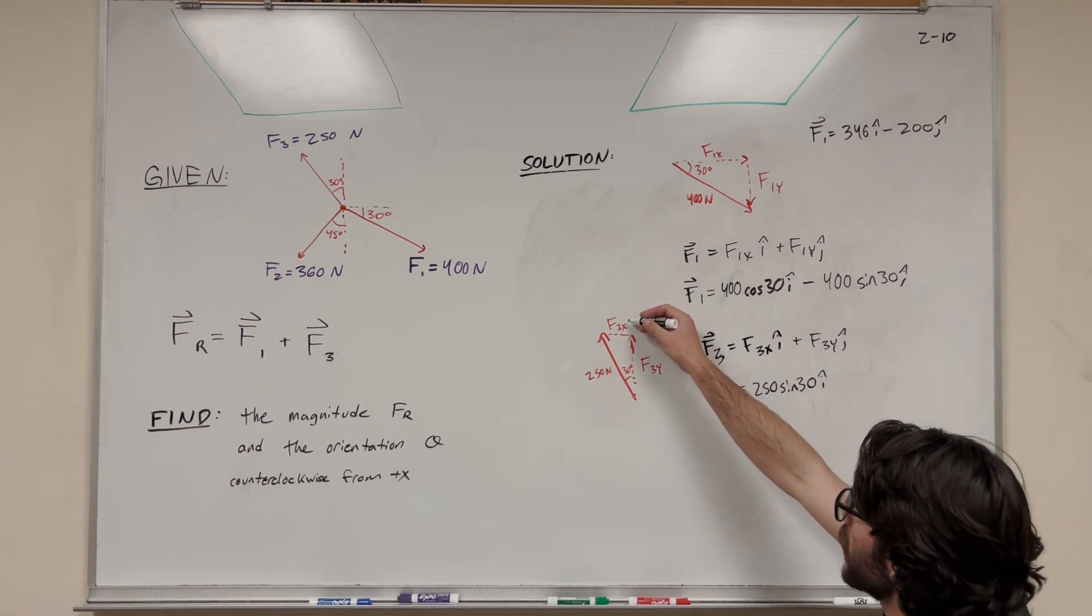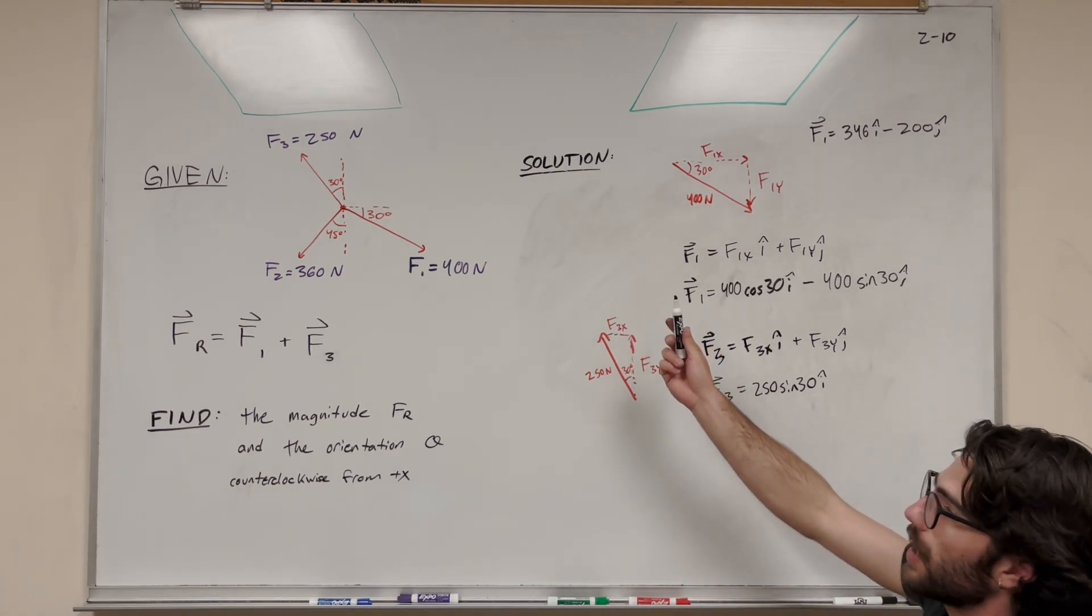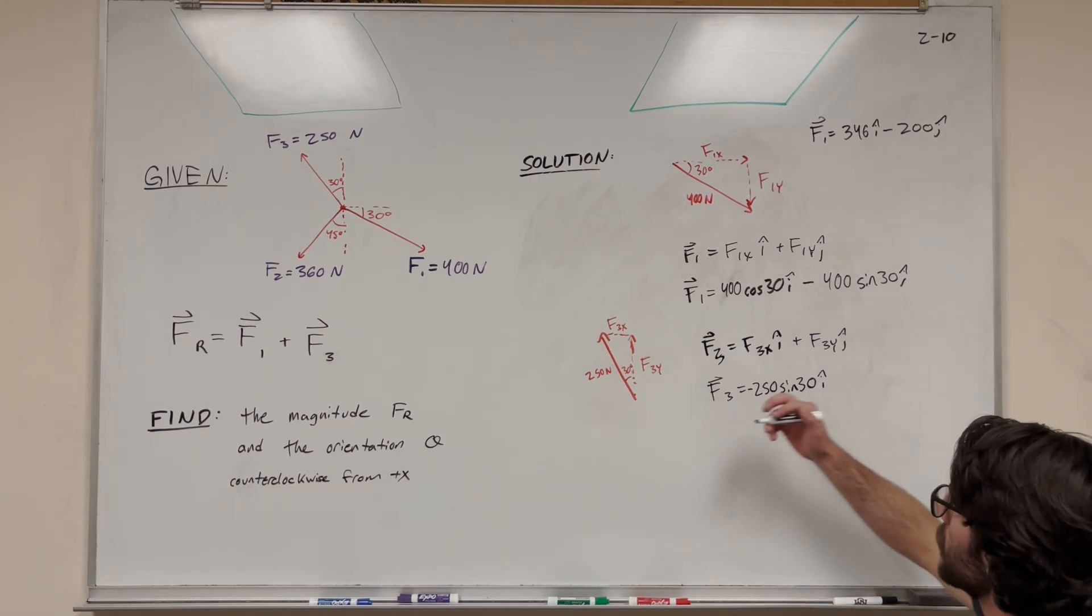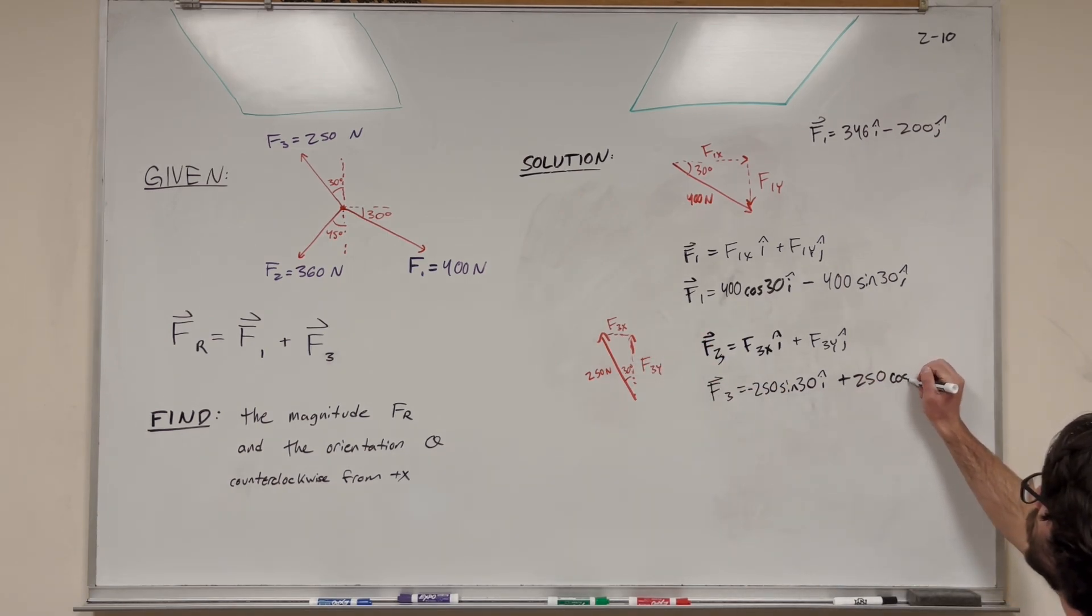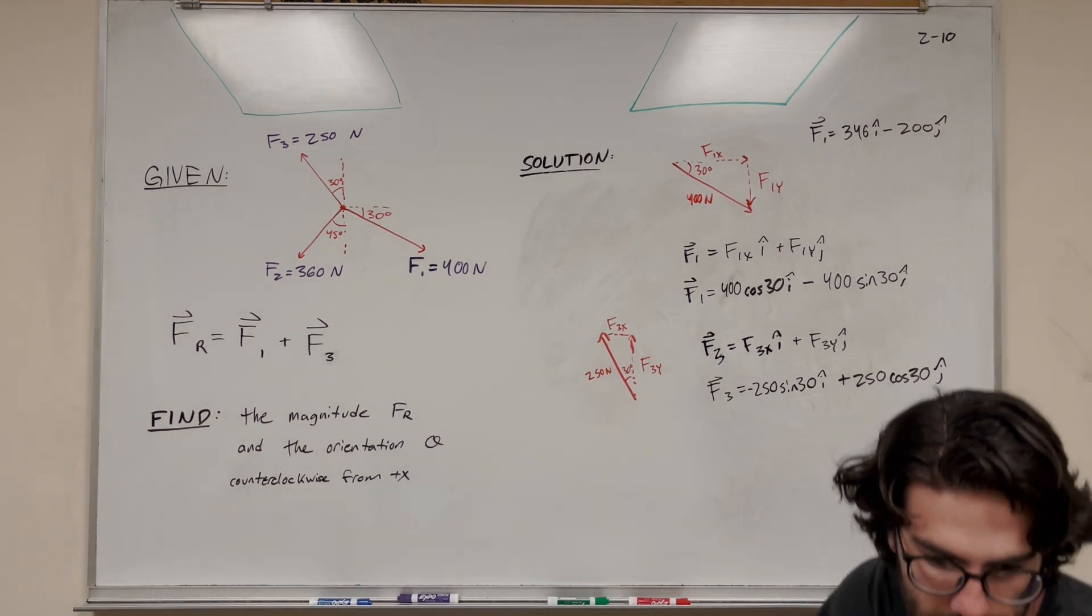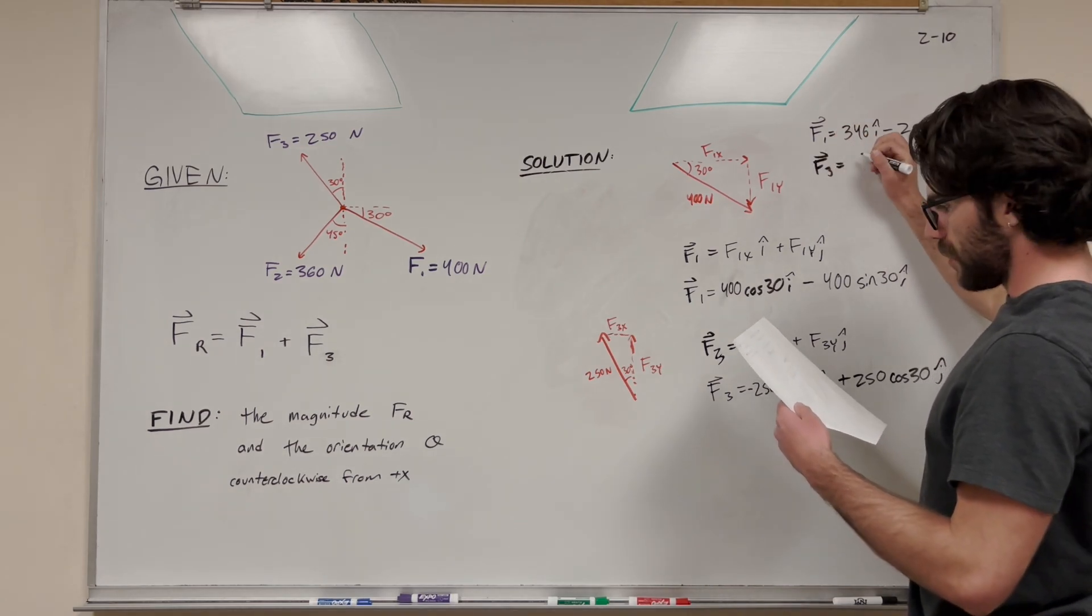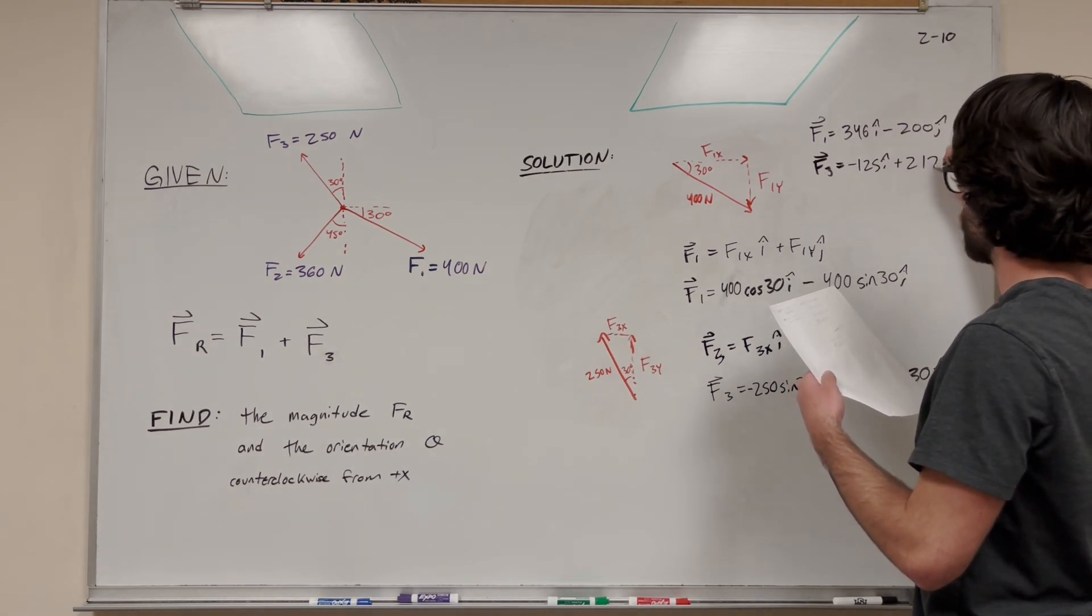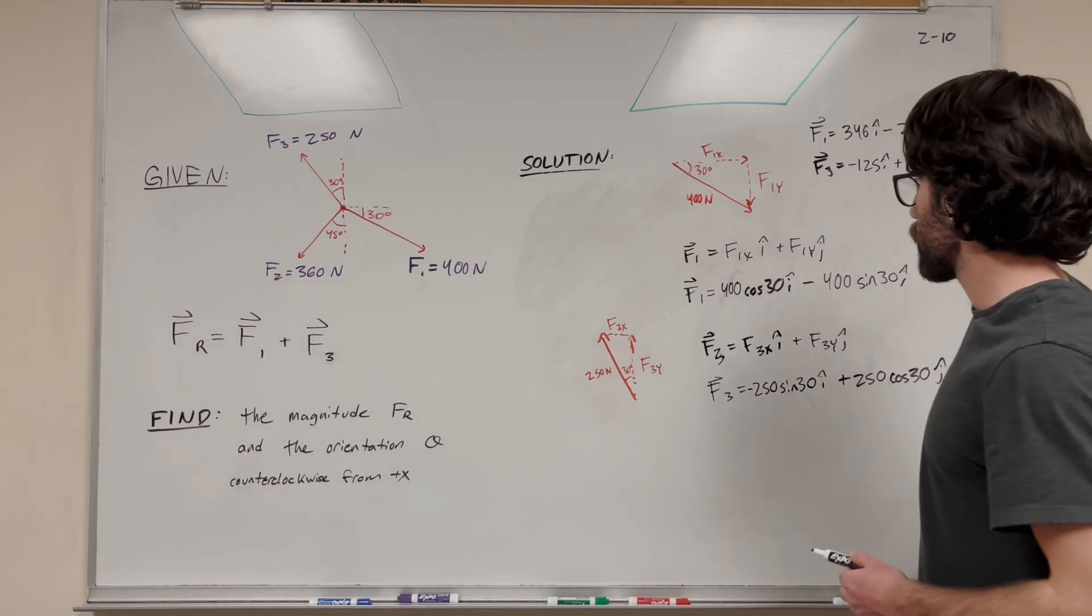Remember this is going in the negative direction. This vector is pointing in the negative x direction but the positive y direction because it's in quadrant 2. So we need to attach a negative to that x component. The y direction is positive, so we add 250 times cosine of 30 j, because it's adjacent to the angle. Solving this gives F3 equals negative 125i plus 217j newtons.